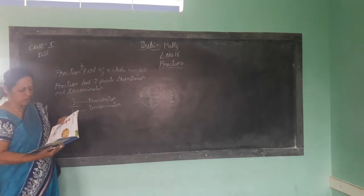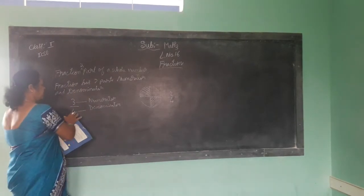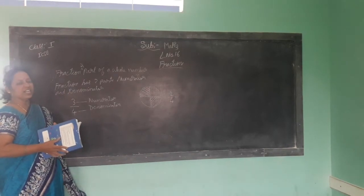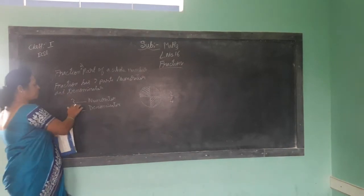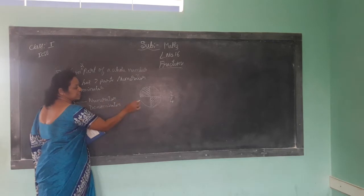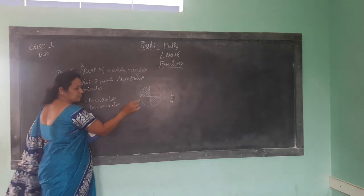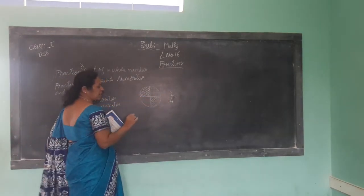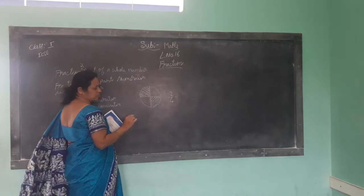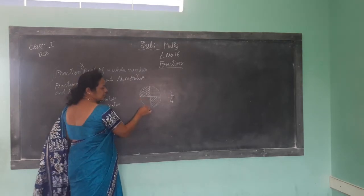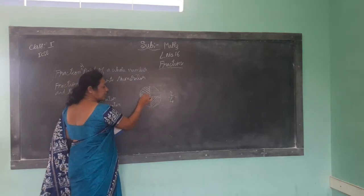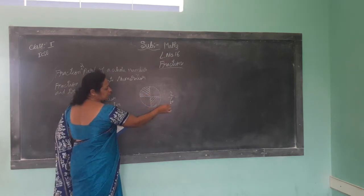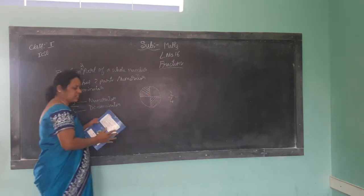Top number is called the numerator. Down number is called the bottom number — it's called the denominator. Top number: always write how much is colored in the given figure — that you write in the numerator place, the top number. Down number, that is the bottom number — color and uncolored, total you write the down number. Okay children?